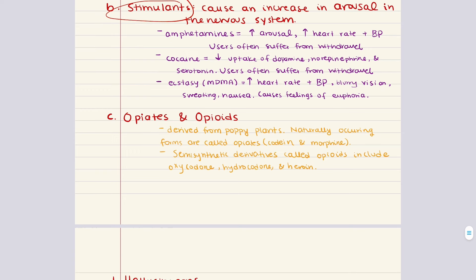The next category is opiates or opioids, derived from the poppy plant. Opium has been used and abused for centuries. Naturally occurring forms called opiates include morphine and codeine; semi-synthetic derivatives called opioids include oxycodone, hydrocodone, and heroin. These compounds bind to opioid receptors in the peripheral and central nervous system, resulting in decreased reaction to pain and a sense of euphoria. Heroin was originally created as a substitute for morphine; however, once injected, the body rapidly metabolizes heroin to morphine.